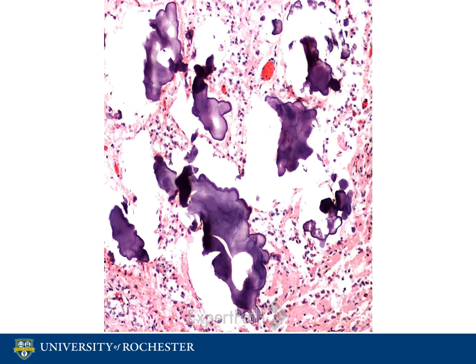Corpora arenacea, also known as brain sand, is found in the pineal gland. This appears as a dark purple spot. It is made up of calcium that builds up in the pineal gland. The amount of brain sand increases with age, but there is no known function.